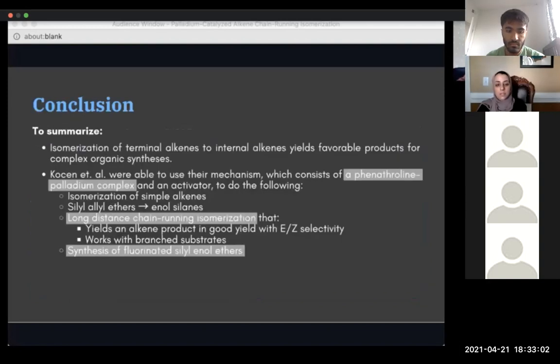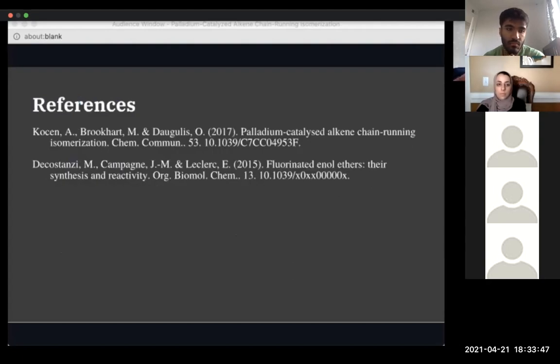With that, I'll wrap up everything that I've talked about so far. It was definitely a lot to try and understand. I'm sure my chemistry people definitely have a better understanding, but here are some of the main takeaways from the research. Isomerization of terminal alkenes to internal alkenes yields favorable products for complex organic syntheses. Kostin et al were able to use their mechanism, which consists of a 2,9-dimethyl-phenanthroline-palladium-methyl chloride complex paired with an activator to isomerize simple alkenes and siloenol ethers. The method also works for long-distance chain-running isomerization and the synthesis of fluorinated siloenol ethers. That's basically what we saw in this presentation, what I was able to deduce from their research paper. These are my references. The first one, obviously, is the paper itself, and the next one is that 30-page paper I talked about, about fluorinated enol ethers.